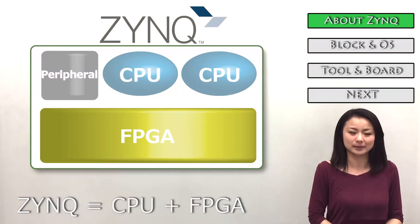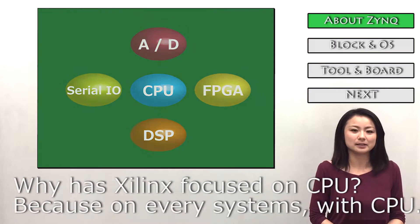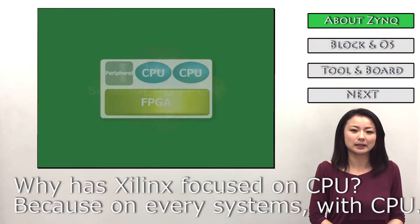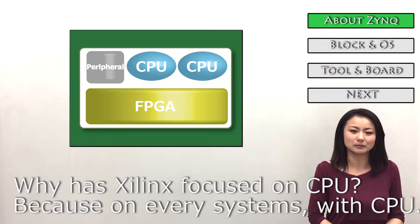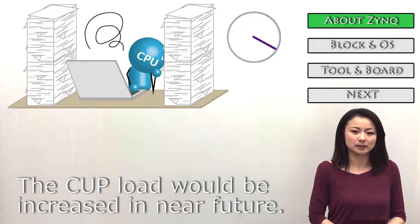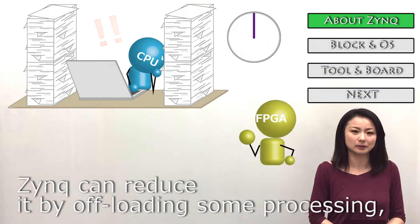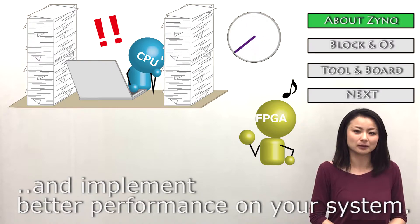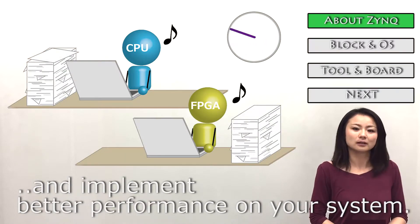Zynq is a device integrating both CPU and FPGA. Why is Xilinx focused on CPU? Because on every system there is a CPU, and the CPU load will be increased in the near future. Zynq can reduce it by offloading processing and implement better performance on your system.